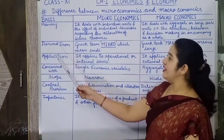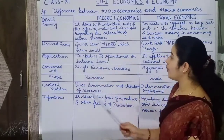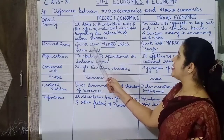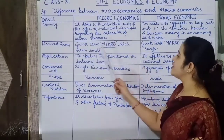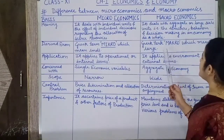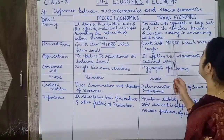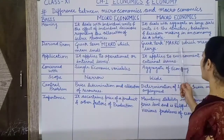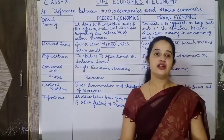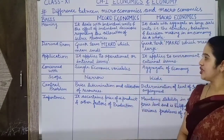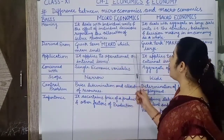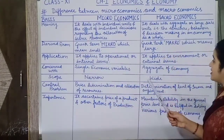The second difference is origin: microeconomics is derived from the Greek term 'micro' which means small, whereas macroeconomics is derived from the Greek term 'macro' which means large. Third, regarding business application, microeconomics applies to operational or internal issues, whereas macroeconomics applies to environmental or external issues.